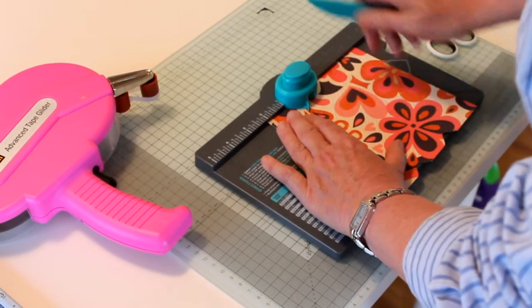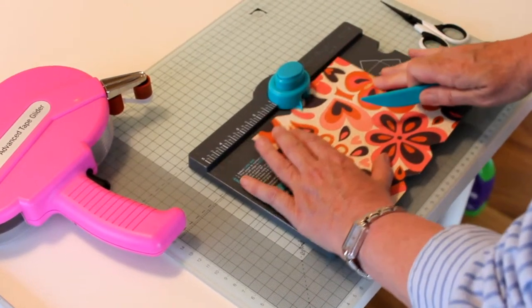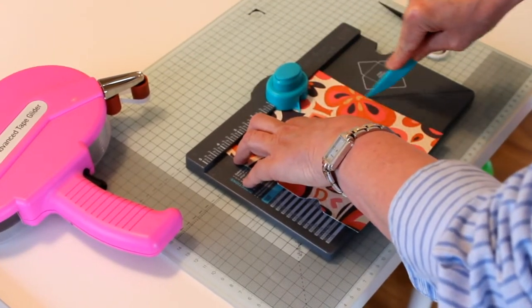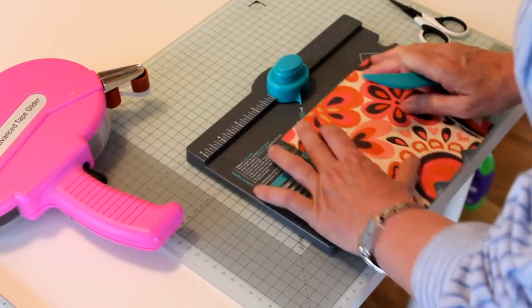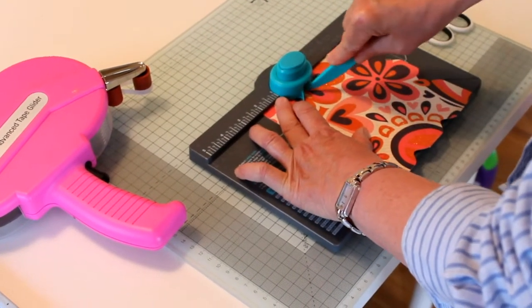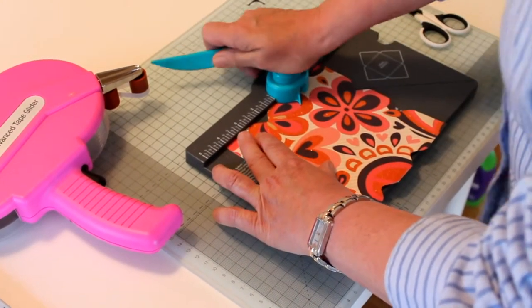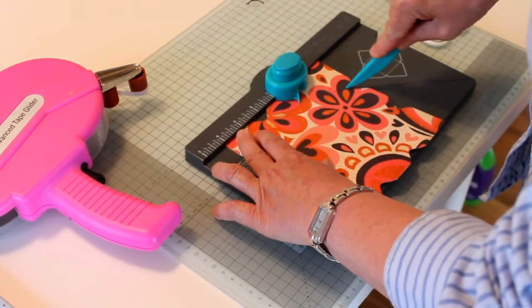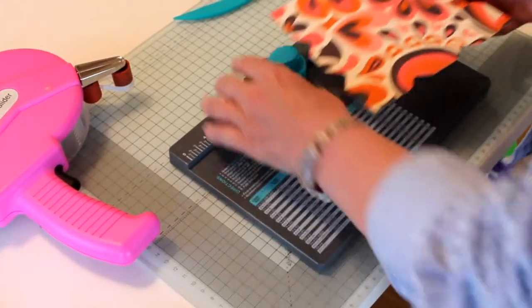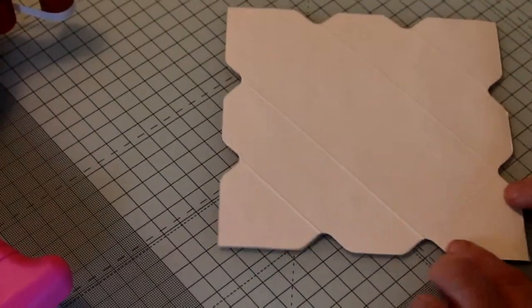Okay, now it's difficult to see the score lines on the designer paper, but when you turn it over they become very obvious. So the next stage is to simply burnish with your bone folder all your score lines.